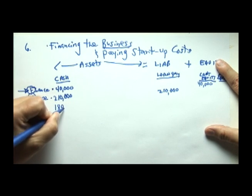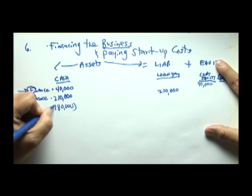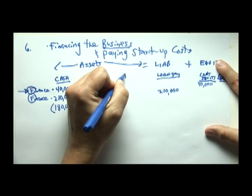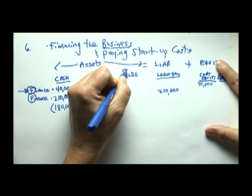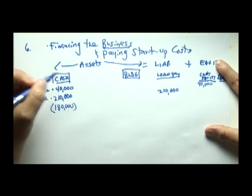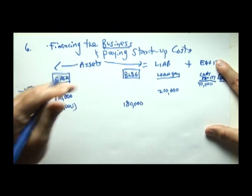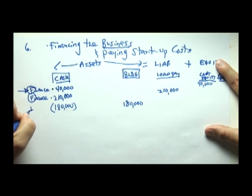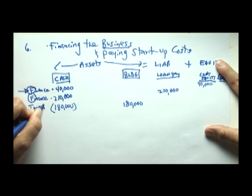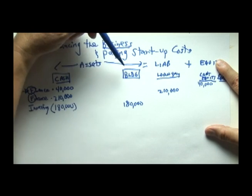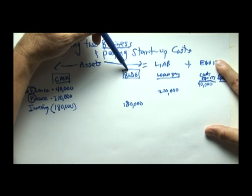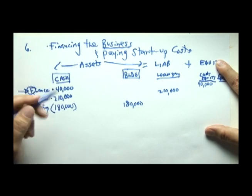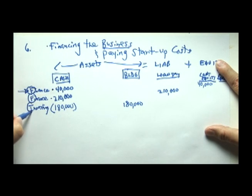Let's have the owner invest $180,000 in a building (abbreviated BLDG). The building goes up $180,000 and cash goes down $180,000. We label this an I for investing activity, because using cash to buy things that will last more than a year — like a building — is known as a long-term investing activity.